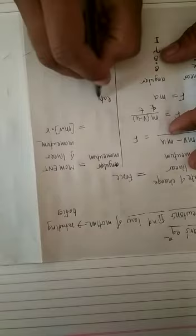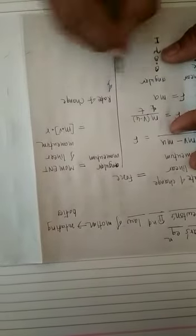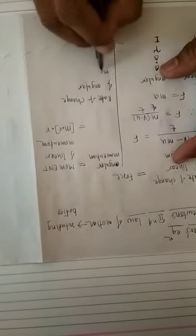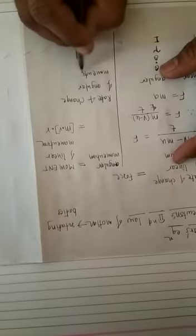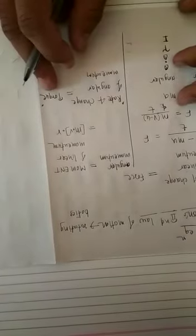For rotating bodies, the rate of change of angular momentum is proportional to torque — the equivalent of force. So Newton's equation for rotating bodies states: rate of change of angular momentum is equal to the torque applied on that body or machine.